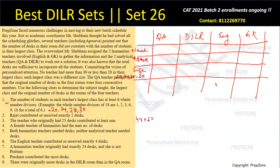Since total desks are sufficient — no extra and no shortage overall — the sum of all desks must equal the sum of all student class sizes. So 20 + 24 + 28 + 30 must equal 4x + 6.